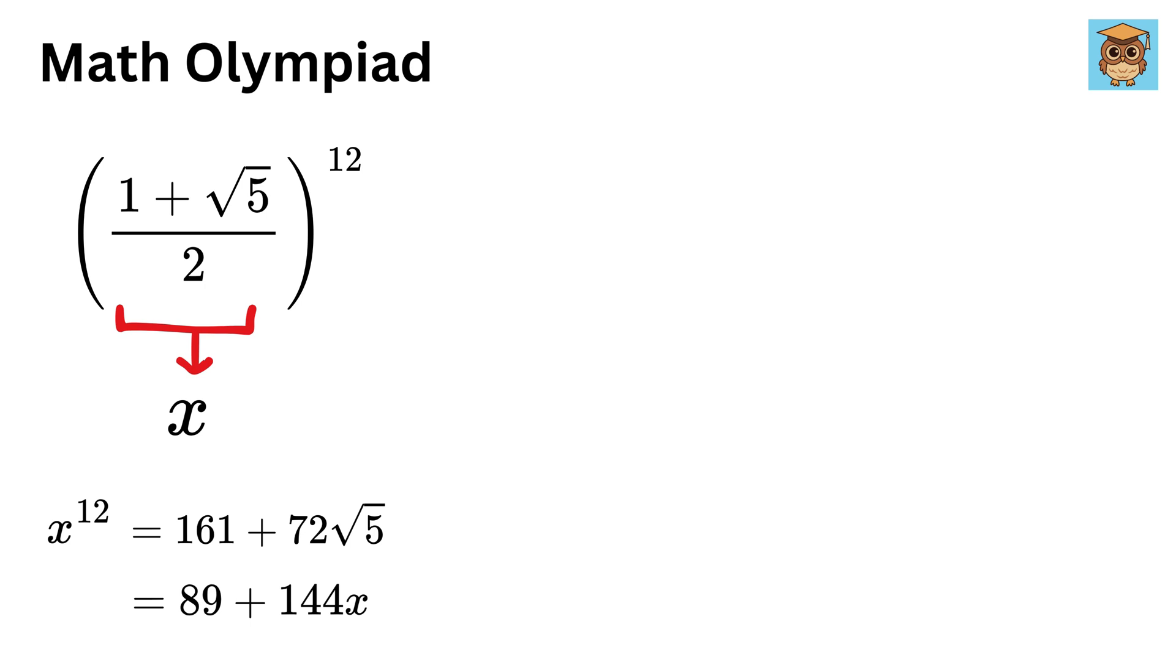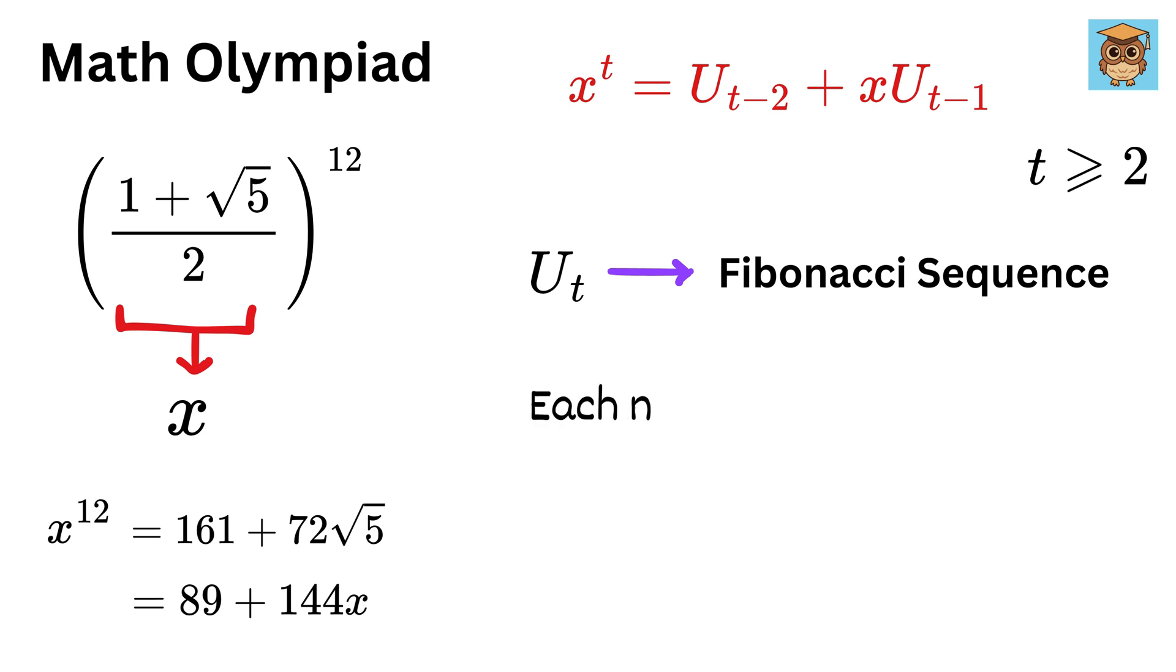the shortcut is this formula: x^t = U_(t-2) + x·U_(t-1) for all integer t ≥ 2. This U_t is the Fibonacci sequence, which is a series of numbers where each number is the sum of the two numbers before it. It starts with 0 and 1.